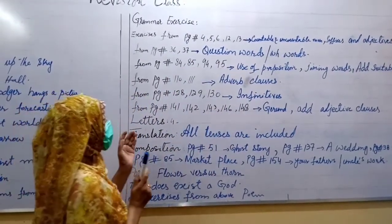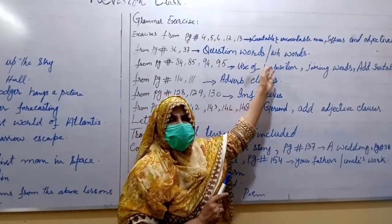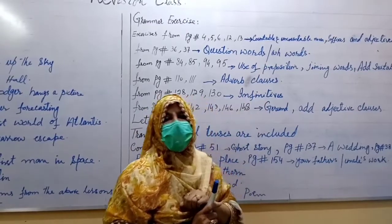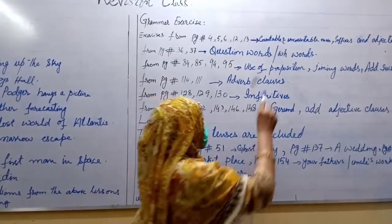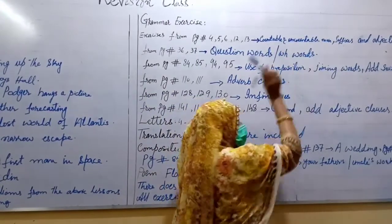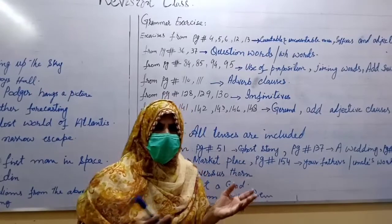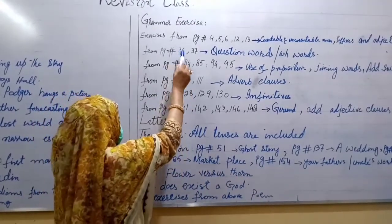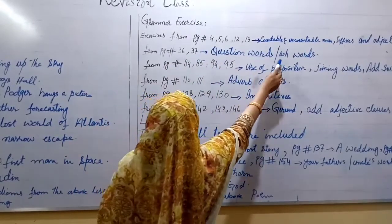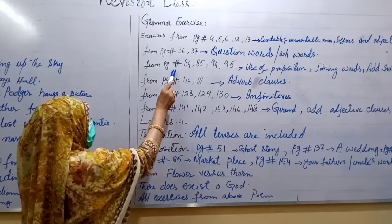Next exercise from page number 36, 37. What you have done in these exercises? You have done question words. That is, you have to add question words to complete the sentences. What is question word? That is WH word. Like what, where, whom, how, and so on. You have to complete these exercises by adding WH word.